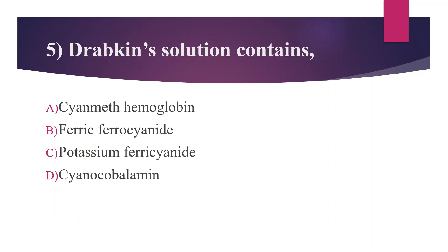Fifth question: Drabkin solution contains — Option A: Cyanomethemoglobin, Option B: Ferricyanide, Option C: Potassium ferricyanide, Option D: Cyanocobalamin. Answer is Option C, potassium ferricyanide. Drabkin solution is used to demonstrate hemoglobin from blood. It contains potassium ferricyanide, potassium cyanide, and potassium dihydrogen phosphate. Potassium ferricyanide oxidizes hemoglobin to methemoglobin, and then to cyanomethemoglobin.